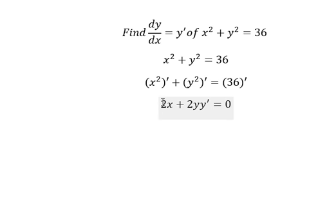Next, we simplify by dividing out the 2. Next, we move x to the right side, and you get negative x.